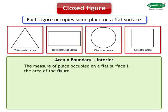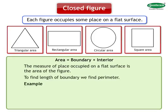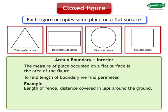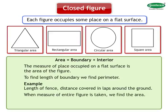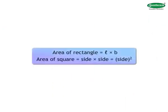Area is the boundary and its interior. The measure of place occupied on a flat surface is the area of the figure. To find the length of a boundary, we find the perimeter — for example, length of a fence or distance covered in laps around a ground. When the measure of the entire figure is taken, we find the area — for example, sowing seeds in a field or painting walls. Area of rectangle equals length into breadth. Area of square equals side into side, which equals side squared.